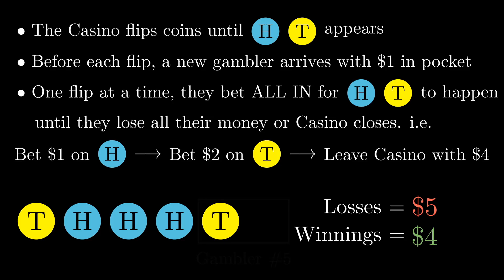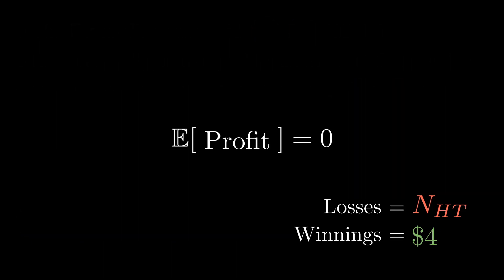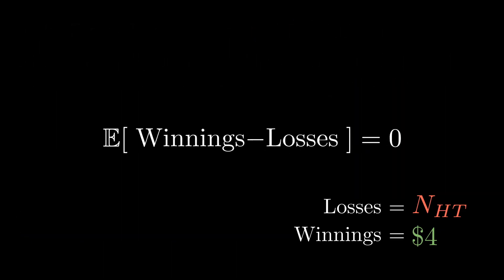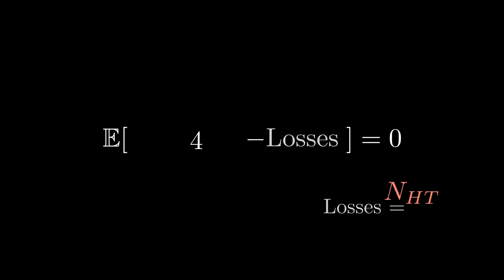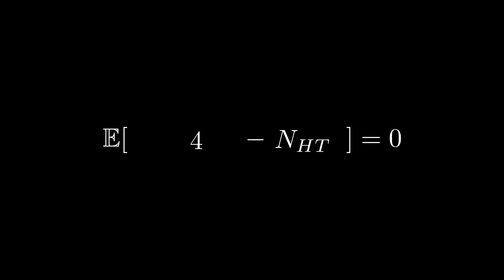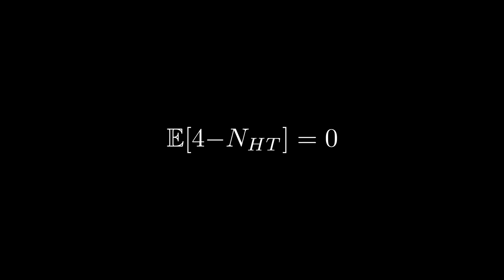The same conclusion holds no matter what sequence of coin flips comes up. The casino always takes in $1 for each gambler, so the losses always equal N_HT — the number of coin flips until heads-tails is reached. There is always exactly one gambler who gets winnings: the second-to-last gambler who arrives at exactly the right moment that heads-tails first appears and wins $4. Since the expected profit must be zero by the optional stopping theorem, we can rearrange: the expected value of N_HT must be exactly 4.